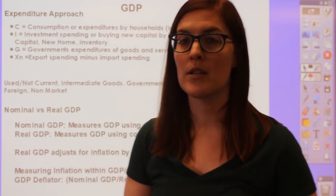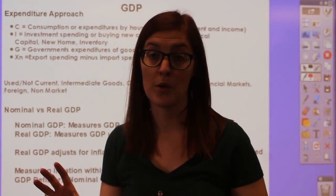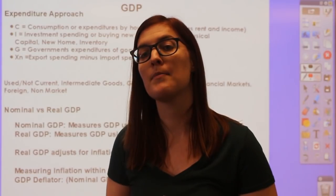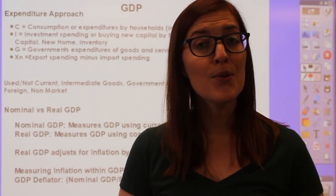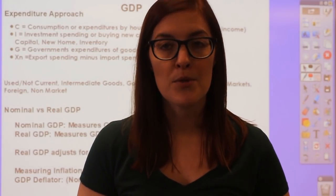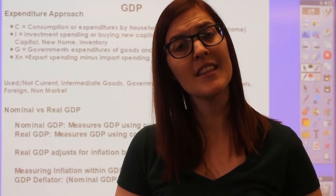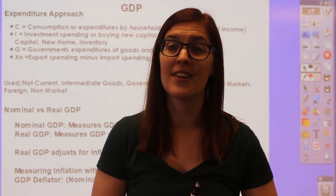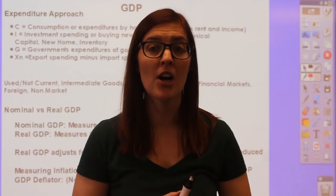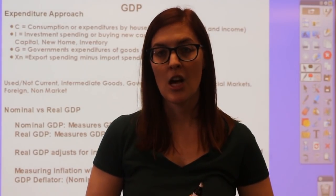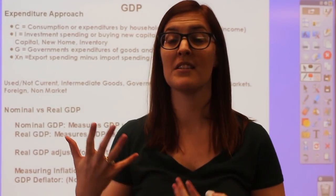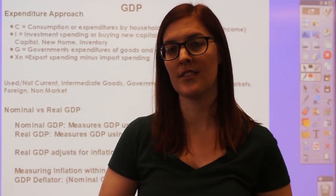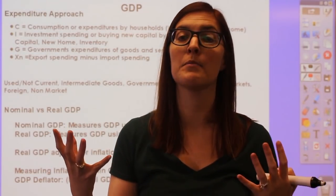These four components appear throughout the entire macro course. The first and largest is consumption (C), which typically makes up two-thirds of GDP. It deals with goods and services consumers buy on a daily basis—buying a cup of coffee, getting a haircut. Also under C is paying rent: if you're renting an apartment to live there, that counts under C because you're temporarily using that place.